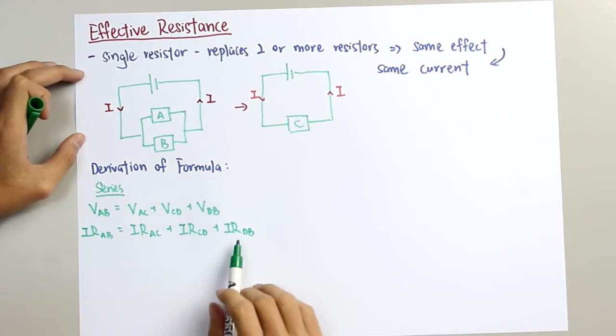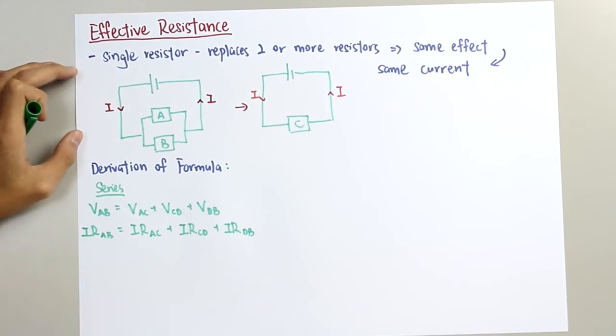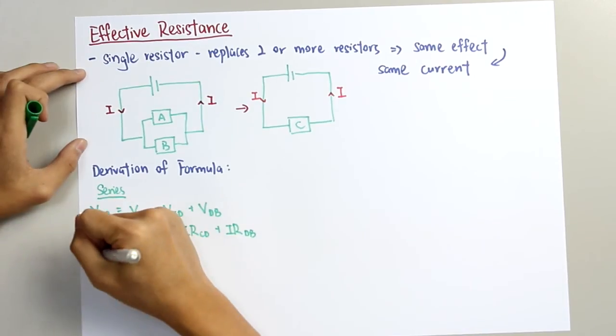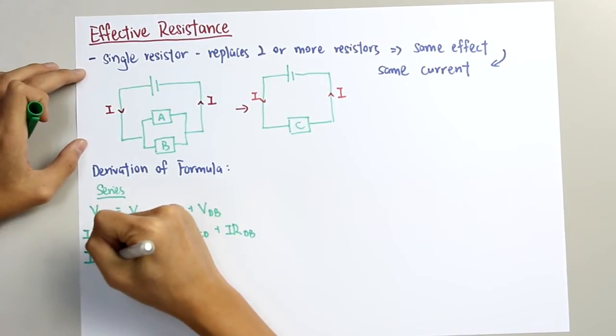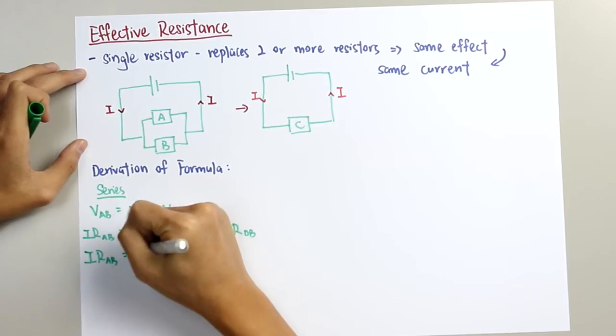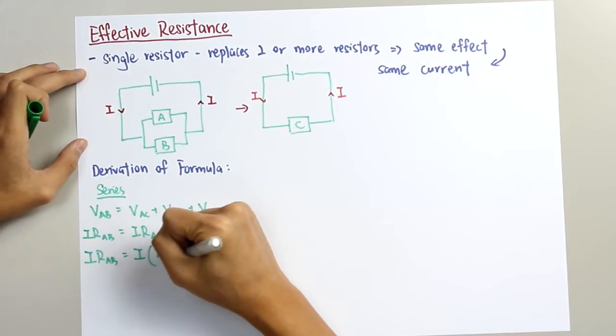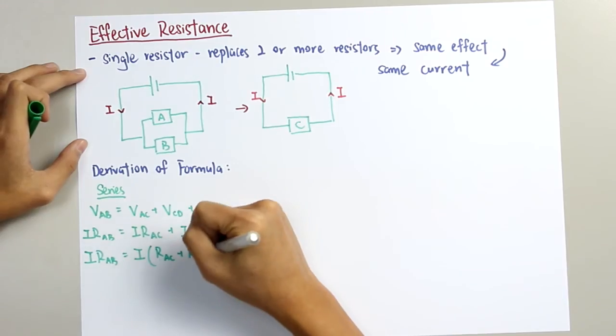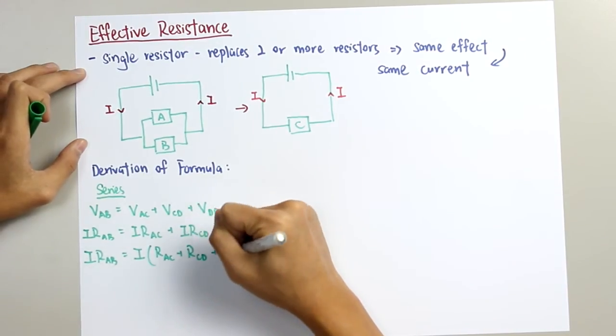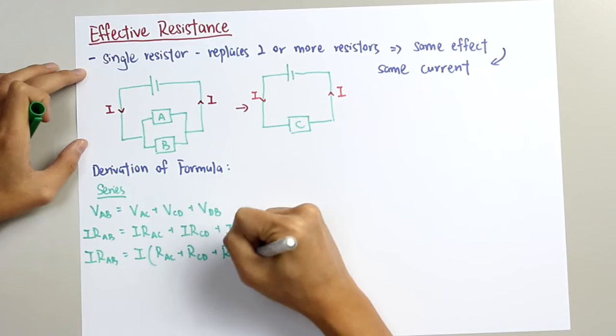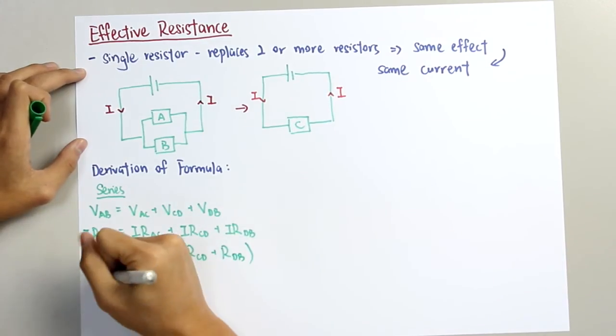The I here will always be constant. So we take out the common factor: I times RAB equals to I times RAC plus RCD plus RDB.